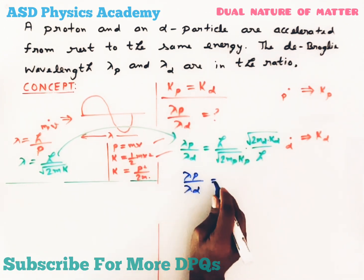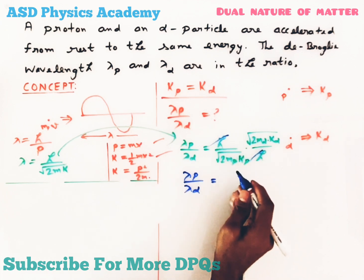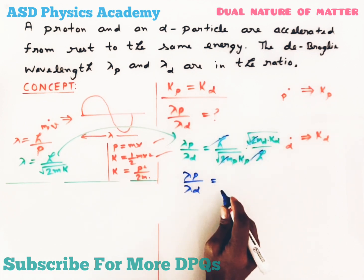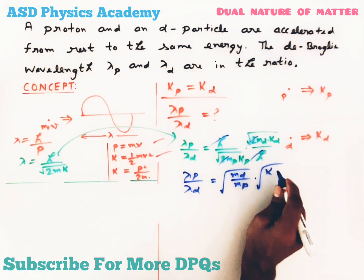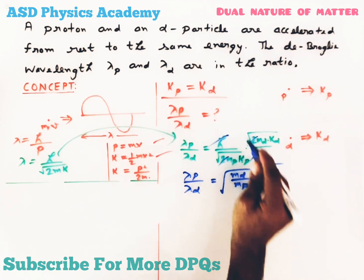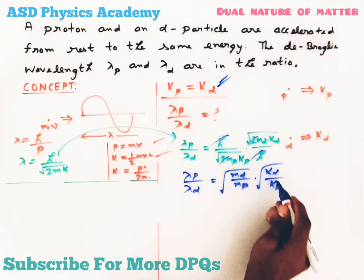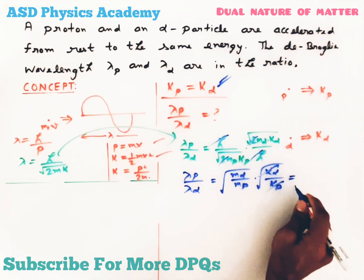We can write λp/λα = √(mα/mp)·√(Kα/Kp). We know that kinetic energy of both particles are same, so this will cancel out. That means we get √(mα/mp).